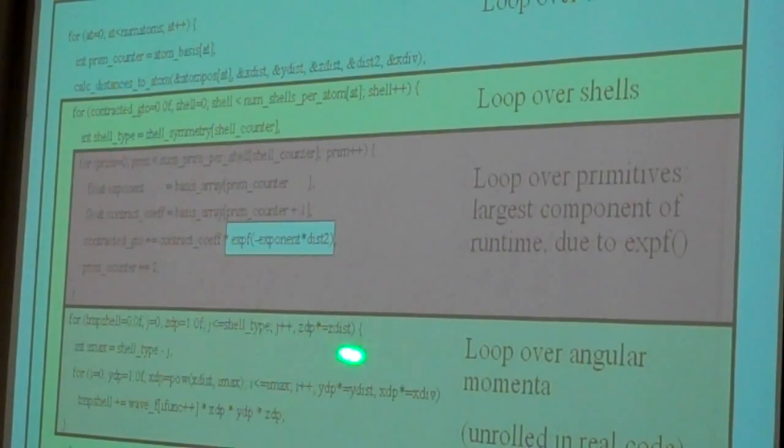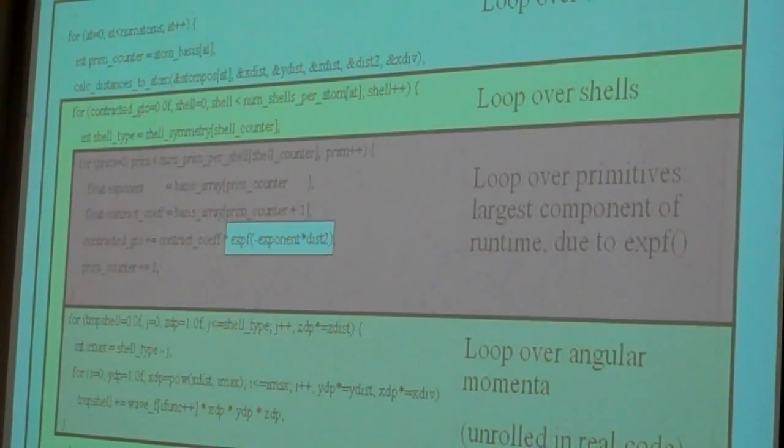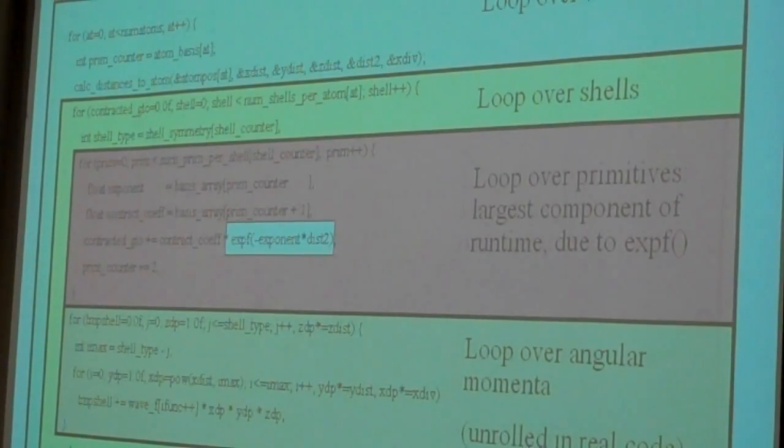This loop here, we can actually, since we have a fixed number of different types of angular momenta, that's these different S orbital, P orbital, D orbital, FG, etc. All those different orbital types have a different scheme of how this loop function ends up being evaluated.